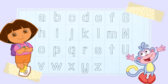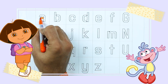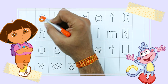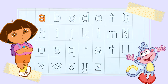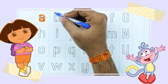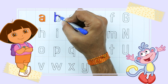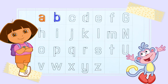Let's start. Make small A. A for apple. It's A. B. B for ball. Small b.